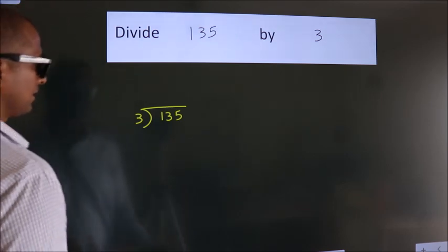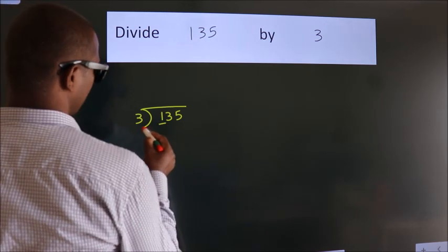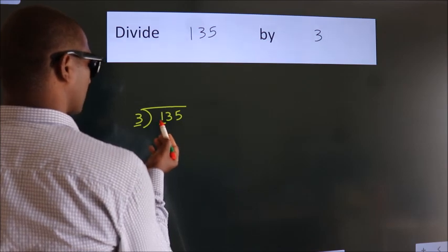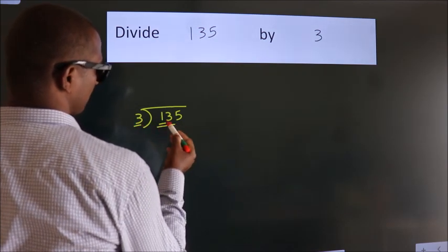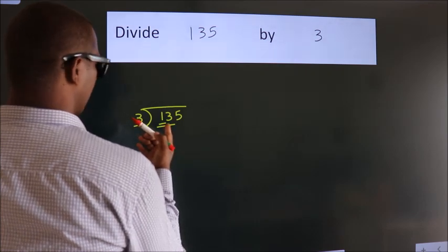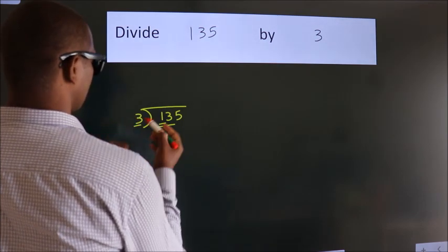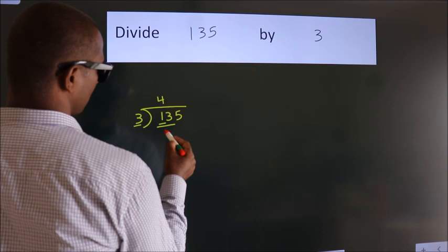Next, here we have 1, here 3. 1 is smaller than 3, so we should take 2 numbers: 13. A number close to 13 in the 3 table is 3 times 4, which is 12.